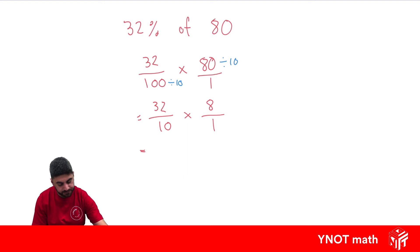Now let's multiply our numerators together and our denominators together. So 10 times 1 in the denominator gives us 10.